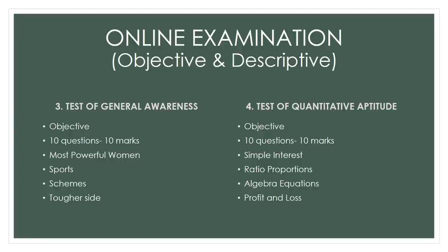When it comes to general awareness and quantitative aptitude, the difficulty level was slightly higher. In general awareness, questions were asked like who won the Dronacharya award last year, who is the most powerful woman according to Forbes, and questions related to schemes and current affairs. The current affairs covered roughly the last 4-5 months — since the exam was conducted on 13th May, questions were from December 2022 to January 2023. For aptitude, questions were from simple interest, ratio and proportions, number system, algebraic equations, and profit and loss — slightly on the tougher side, around banking entrance level difficulty.